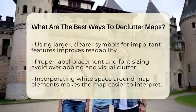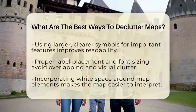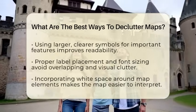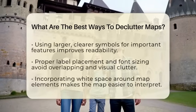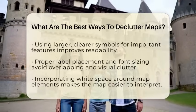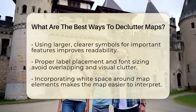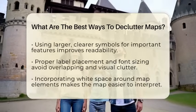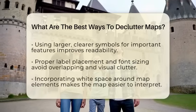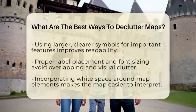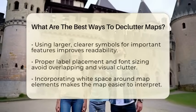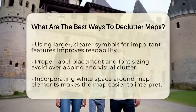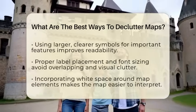Proper labeling is also important. Overlapping labels can make a map hard to read. Use automated label placement tools in geographic information system software to keep labels clear and spaced out. Choose font sizes that are easy to read but not overwhelming. Well-managed labels guide the viewer's eye without creating clutter.